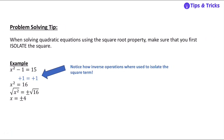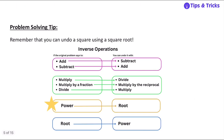Another problem-solving tip: when you're solving quadratic equations using the square root property, make sure that you first isolate the square. It's very tempting to just start taking square roots, but you can't take the square root unless you get that square term by itself on one side of the equation. Remember that you can undo a square using a square root — a root will undo a power.